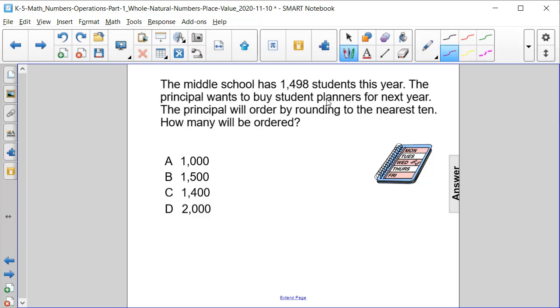Let's start by rewriting our number, 1,498. They are rounding it to the nearest ten, which is the nine place. So then we're going to look at the number directly to the right of it, which is eight. Is eight five or more?